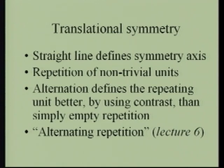This is important. While we can mathematically define a repetition along a symmetry axis, the repetition becomes more obvious — hence more intense and well-defined — if we have some contrast. This leads us to one of the properties observed by Christopher Alexander: in Lecture 6, one of the properties was alternating repetition. So this is how it ties into Lecture 6.